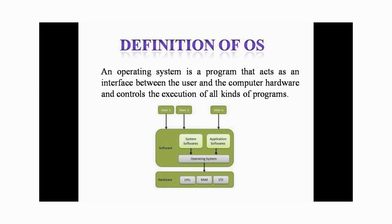From the diagram, you can see user 1, user 2, and n number of users connected to an operating system. An operating system is nothing but a set of softwares. Inside the operating system, there are two kinds of software: system software and application software.